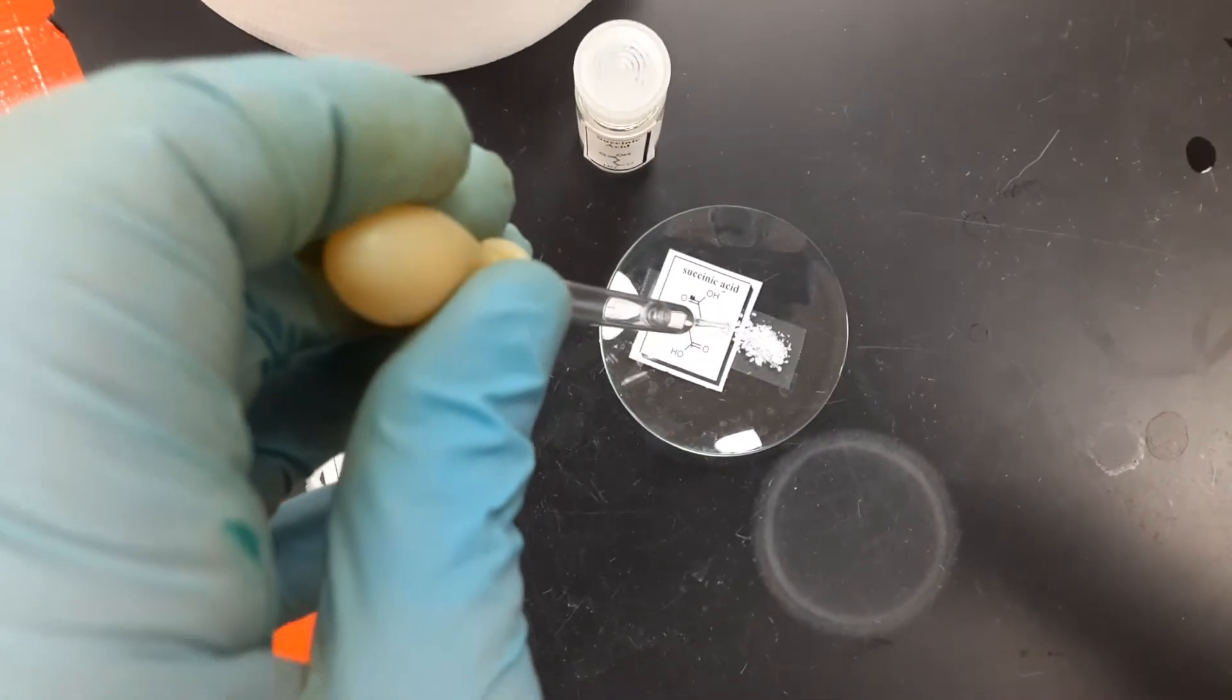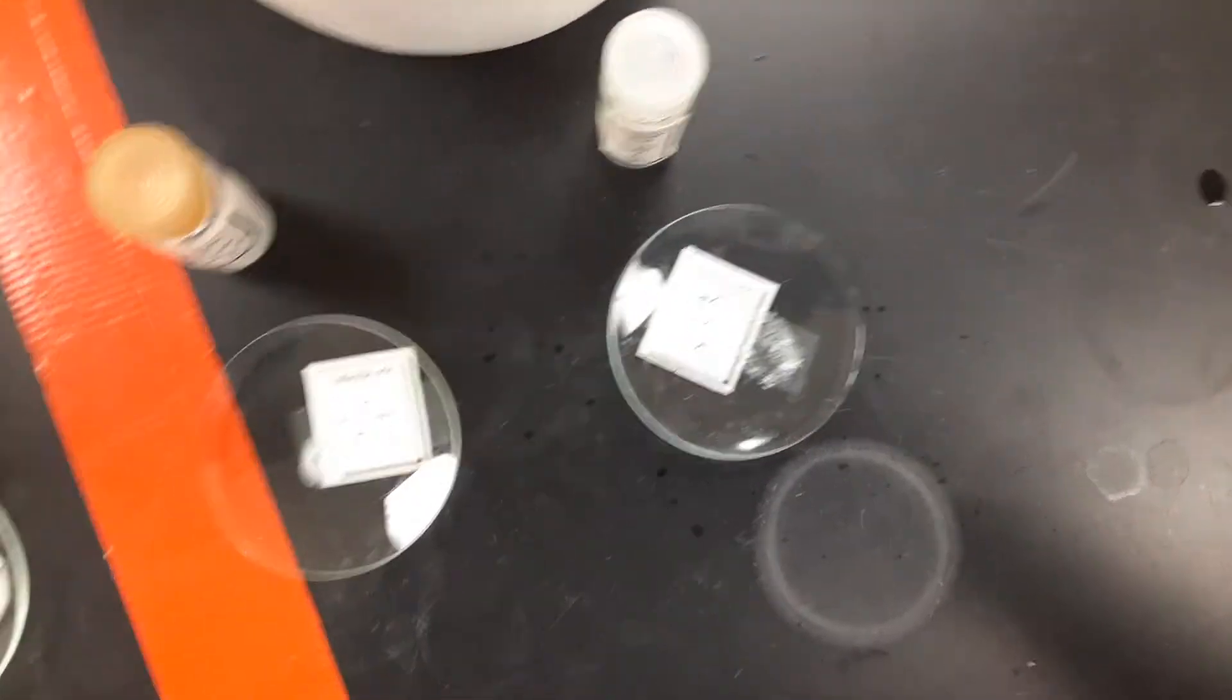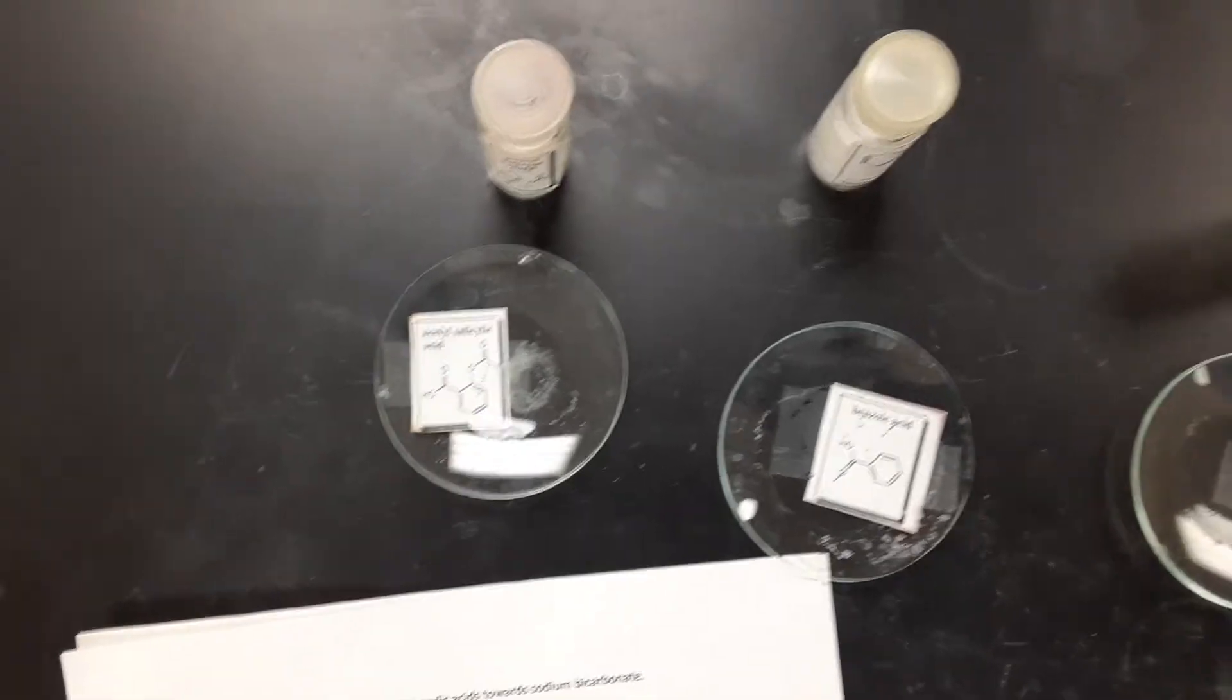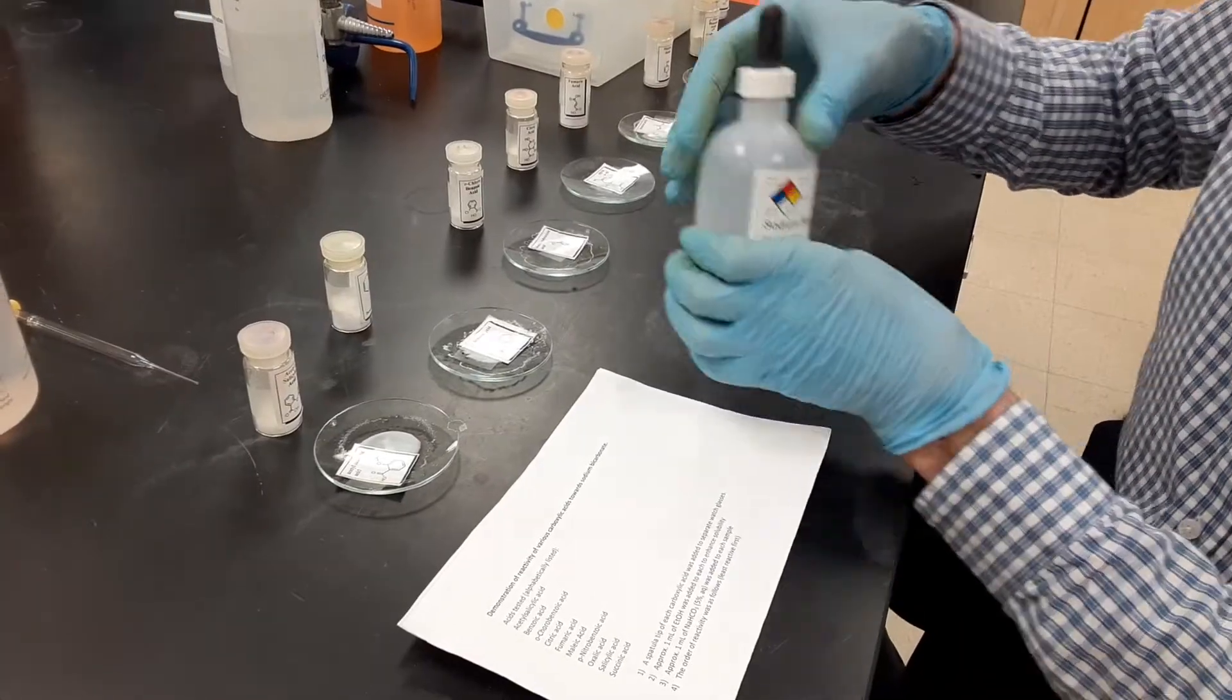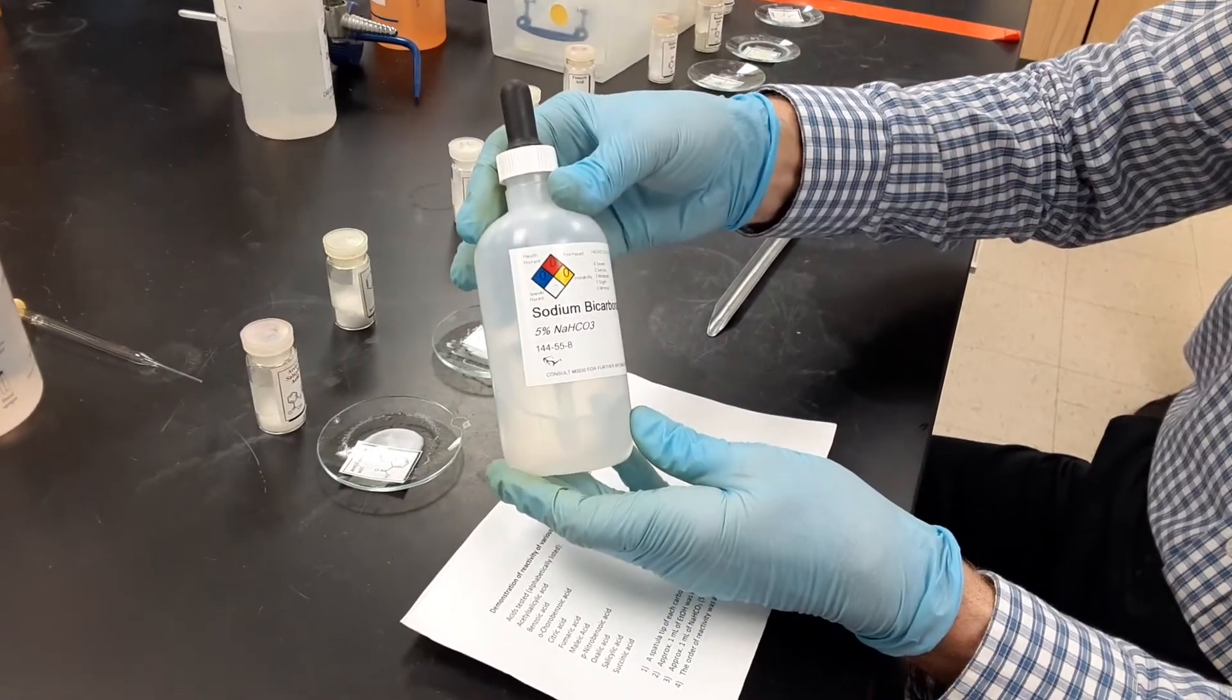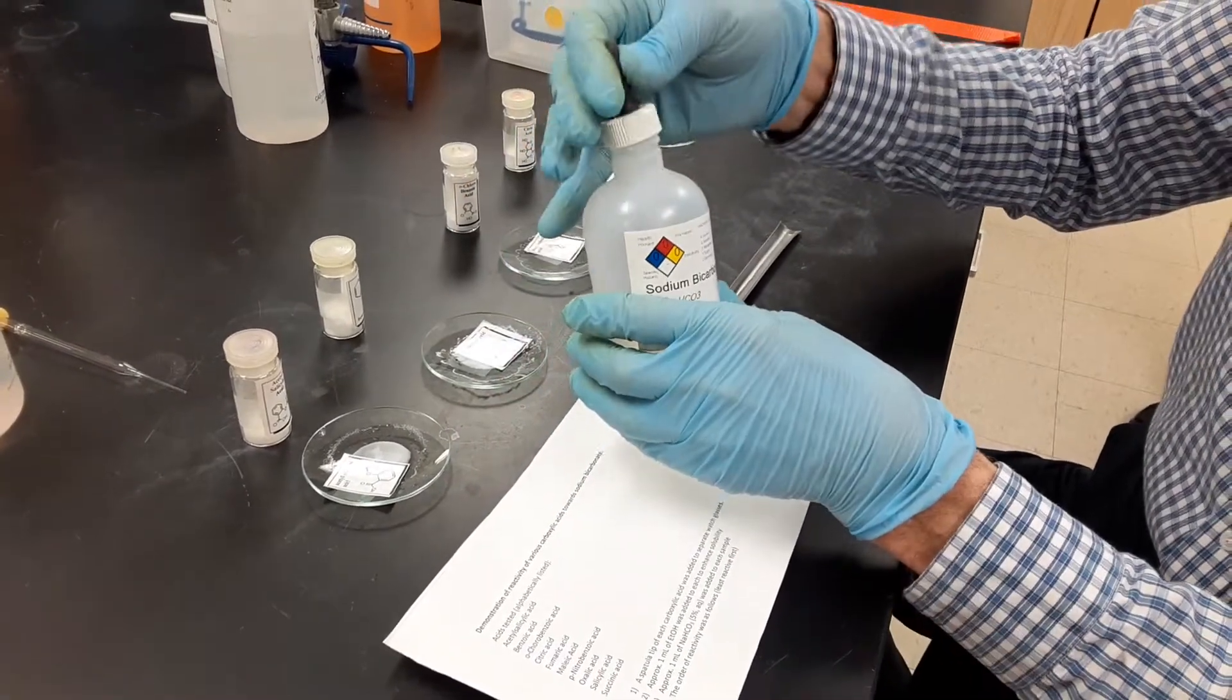We're adding one milliliter of ethanol to each of these watch glasses to enhance the solubility of the carboxylic acids. I'm going to be adding five percent sodium bicarbonate to each one and we want to see which ones form bubbles fastest.